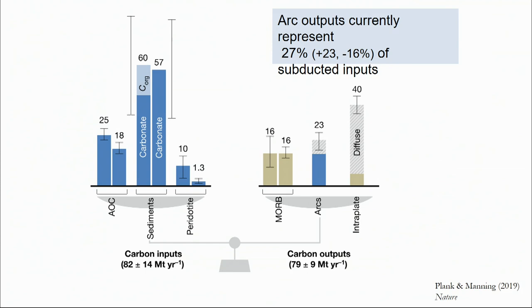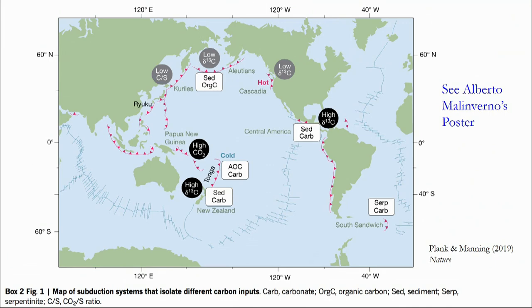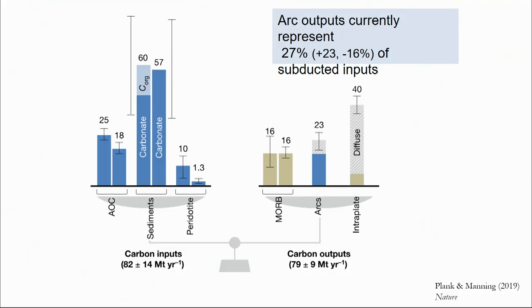DCO has also taught us that there are fluxes we didn't even know about that were so large. For example, the intraplate output — that's diffuse degassing of carbon. We've learned a lot, but we still have a lot to understand. The sediment fluxes in particular could actually dominate the input, but the uncertainties are very large.